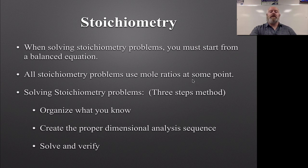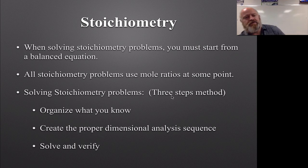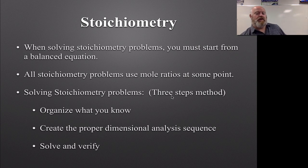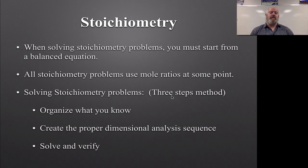Anytime we're dealing with a chemical reaction — how much mass we put in and how much mass we get out — we always have to do a mole ratio at some point. It's usually about a three-step method: organize everything we have, create a proper dimensional analysis sequence, and then solve and verify. Three-step doesn't mean three conversions always — it means organize, set up your sequence, and solve.